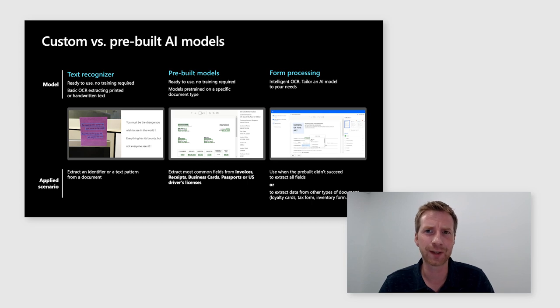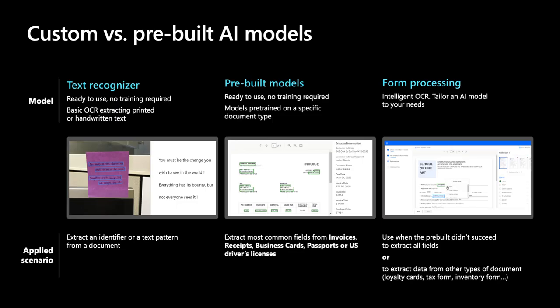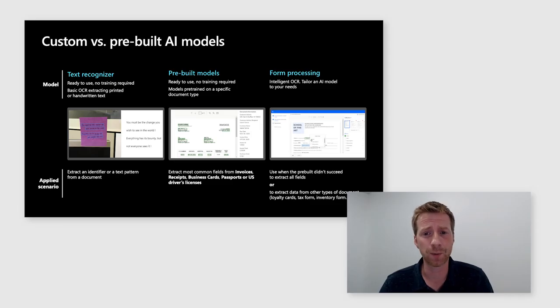There are essentially three types of models you can use in AI Builder to process documents. There's the text recognizer, which is the generic OCR model — you can use it to extract text from a document and then use any of our language models to analyze and transform that content. There are also enriched pre-built models to extract data from an invoice, receipt, or identity document. And finally, there are custom form processing models that you can train to understand a specific document format unique to your business.